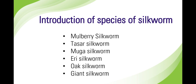The eri silkworm also belongs to the family Saturniidae and produces silk in East Asia. It feeds on castor leaves. The cocoons of this worm have a very loose texture and the silk produced is called eri silk locally. The oak silkworm belongs to the family Saturniidae and is found in China and Japan — they produce good quality silk.